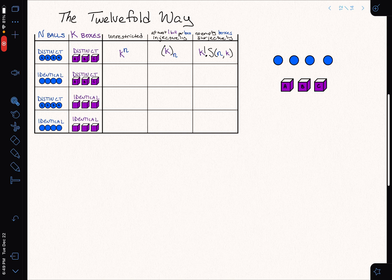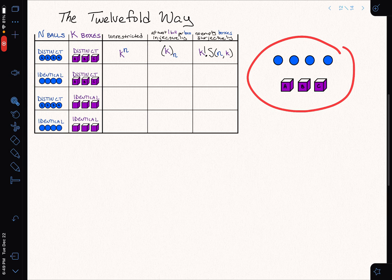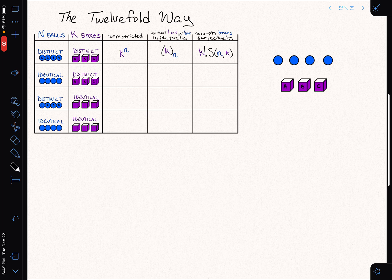Continuing with the 12-fold way, we're now going to do the case where we have identical balls and distinct boxes. So that's the case that we've depicted over here. We want to think about how these different cases play out. So we're doing row two, and as usual, we'll start with the unrestricted case. How does that go?